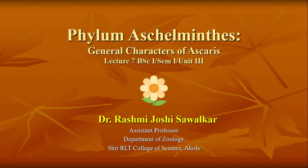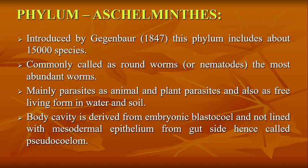Today this is the seventh lecture of Unit 3 and we are starting a new phylum — phylum Aschelminthes — covering the general characters. Phylum Aschelminthes was introduced by Gegenbour in 1847. This phylum includes about 15,000 species and is commonly called roundworms or nematodes.